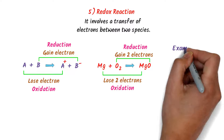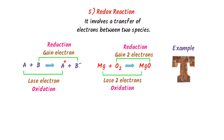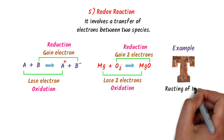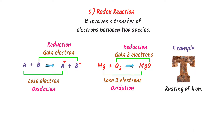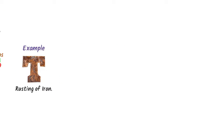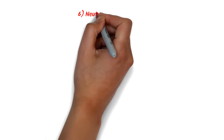In our daily life, the rusting of iron is a good example of a redox chemical reaction.